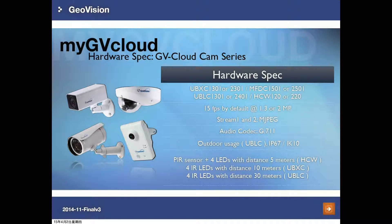As you can see here, so far we have four types of cameras in the JuviCloud cam series. We have a box type camera, a fixed dome camera, and a bullet type camera which is for outdoor use — it supports both IP67 and IK10. And there is also an indoor camera that supports Wi-Fi connection.